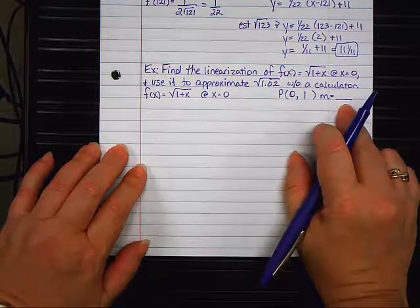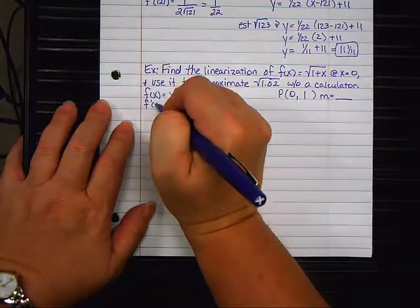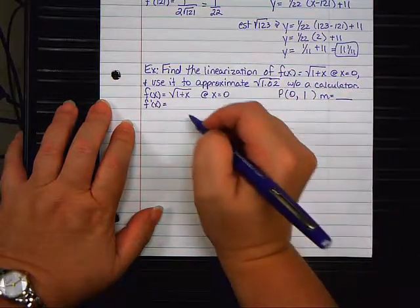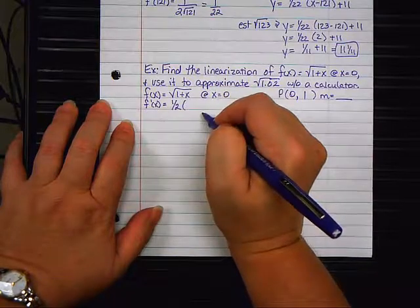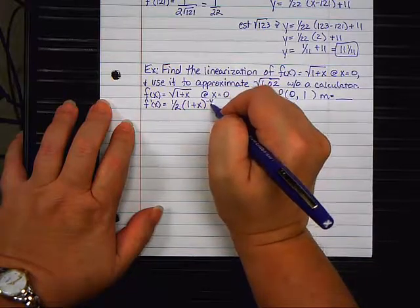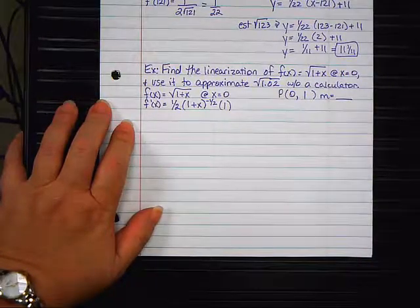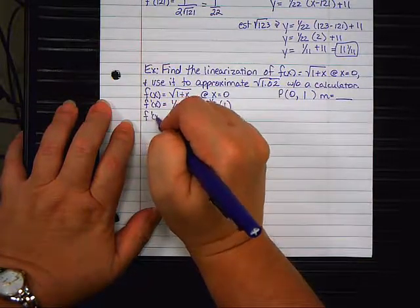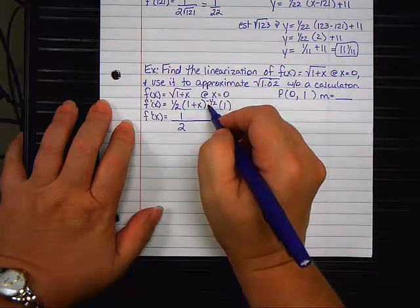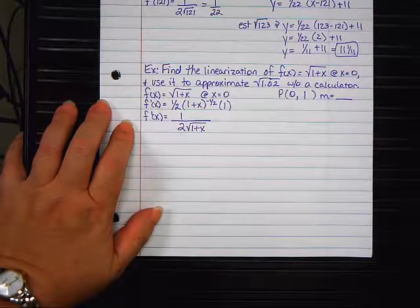Now I need to find the slope of the tangent line, and how do I do that? Take the derivative. Do this very carefully. That is to the power of 1 half. So what is the derivative? 1 half. What comes next? 1 plus x to the negative 1 half times the inner derivative, which is 1. I want to clean this up a little bit. Since I have something with a negative exponent, I'm going to go ahead and just write a fraction. 1 over 2. That goes in a radical on the bottom. 1 plus x.